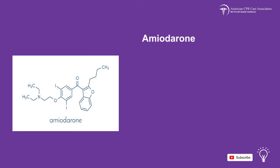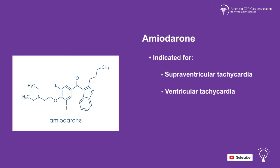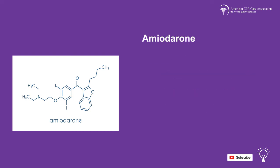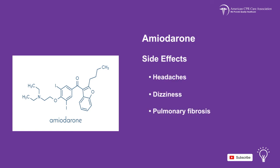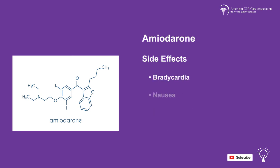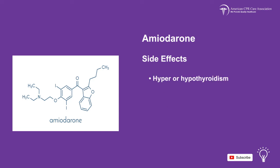The drug amiodarone is indicated for supraventricular tachycardia, ventricular tachycardia, and pulseless arrest. Side effects include headaches, dizziness, pulmonary fibrosis, acute respiratory distress syndrome, bradycardia, nausea, vomiting, rash, hyper or hypothyroidism, congestive heart failure, and abdominal pain.